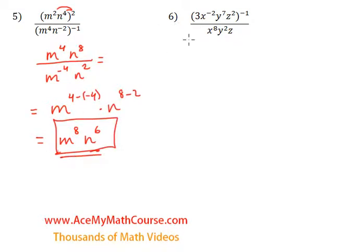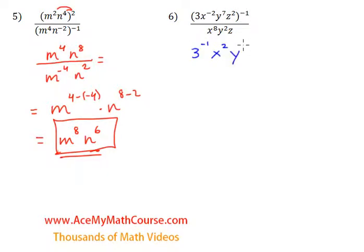Now question 6 — let me change the color so that nobody gets confused. I'm going to apply the negative 1 to every element within the parentheses. So we have 3 to the power of negative 1, x to the power of negative 2 — negative 2 times negative 1 is 2, because negative times negative makes a positive. Y to the power of 7 to the power of negative 1 is y to the power of negative 7, since 7 times negative 1 is negative 7.